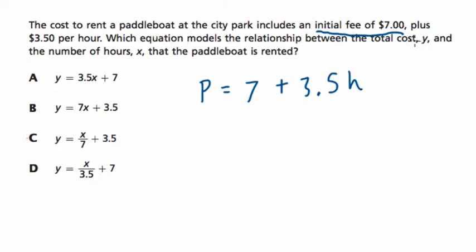Which equation models the relationship between the total cost, Y, so they're saying Y is total cost, and the number of hours, X, that the paddle boat is renting. So here, for me, choice A is the answer.